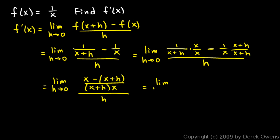And this will be the limit as h approaches 0. Well, if we have x minus this x here, those are going to cancel out. And this minus sign here will still distribute onto that h.